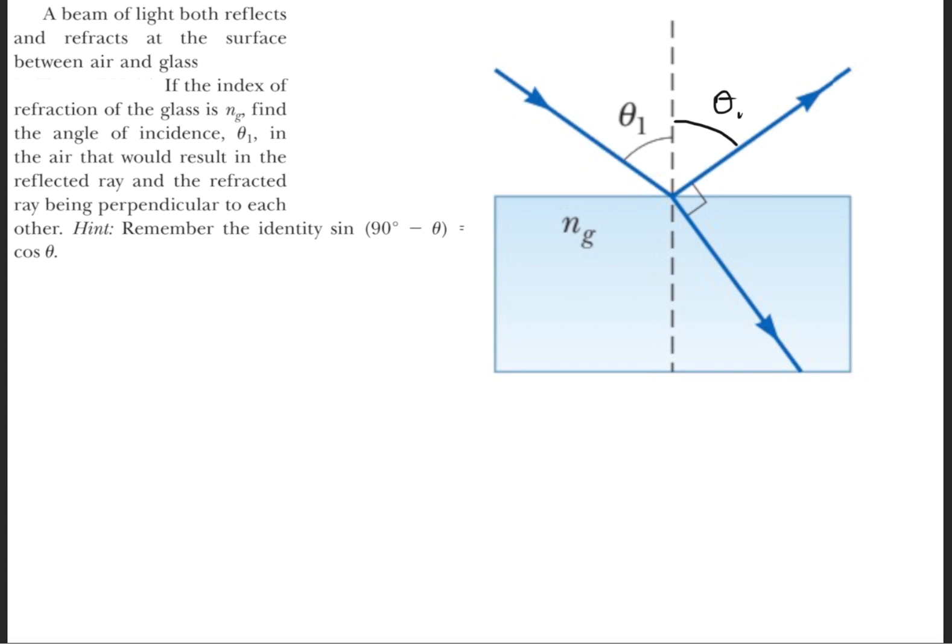Let's begin by analyzing the diagram that was given in the question. We know that this light ray is coming in incident, strikes the surface, is going to reflect, and at the same time, it's going to get refracted.